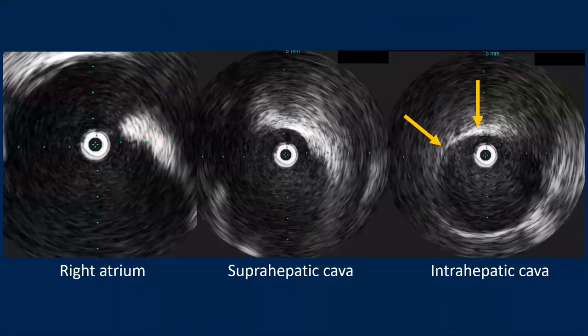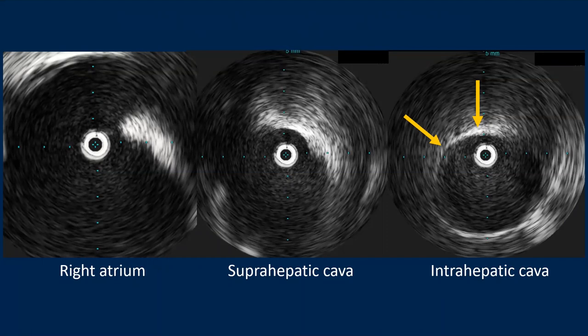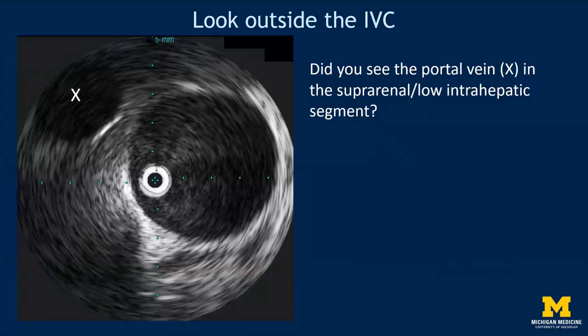Starting from the top on our case example: the right atrium is a large anechoic pulsating structure. As you transition to the intrahepatic cava, you'll notice that the liver echo texture surrounding the cava starts to change. The liver parenchyma and that liver echo texture will provide an acoustic interface that makes the IVC wall appear as a thinner echogenic band, as seen on this right-hand image. Here you can see a still image from the low hepatic cava with the main portal vein at the 10 o'clock position — similar to other extracaval landmarks, this can help identify where you are in space.